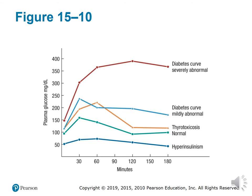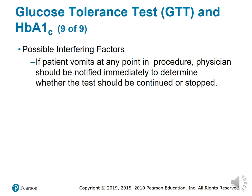For example, if at the 30-minute mark the patient's glucose level is elevated, that may indicate diabetes. You can track the levels at the 60-minute mark and further time points to determine the meaning of the patient's glucose readings.